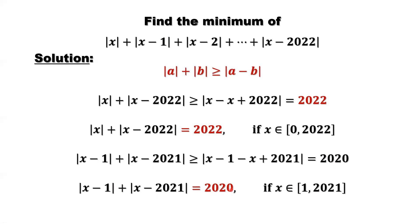Notice the relationship between the previous interval and the current interval: [1, 2021] is a sub-interval of [0, 2022]. That means if x is inside [1, 2021], it is also inside [0, 2022]. So for x inside this smaller interval, both equal signs are true.